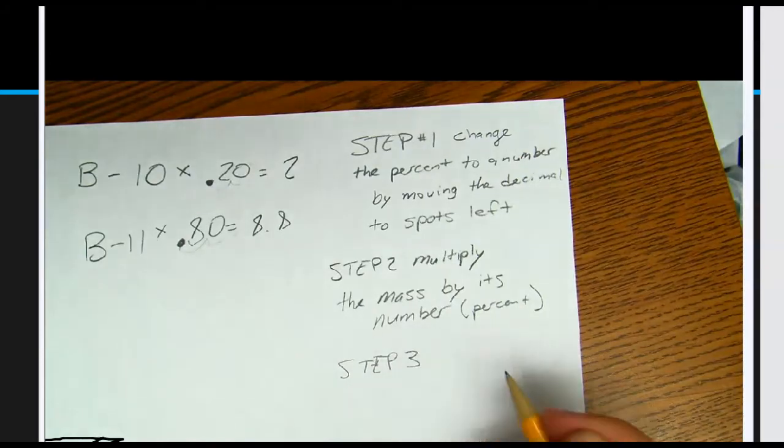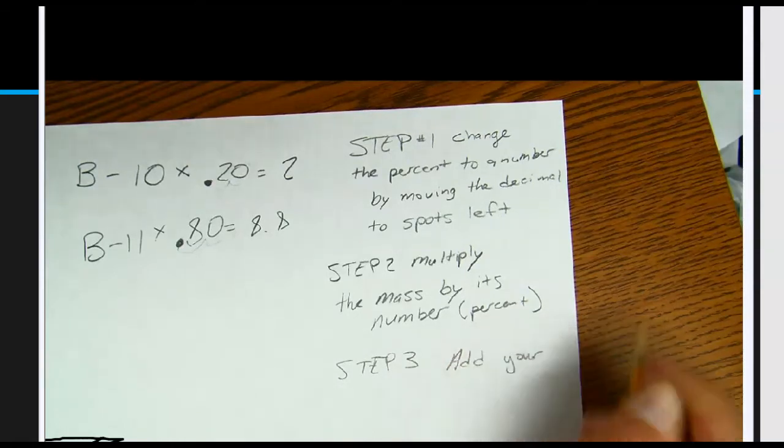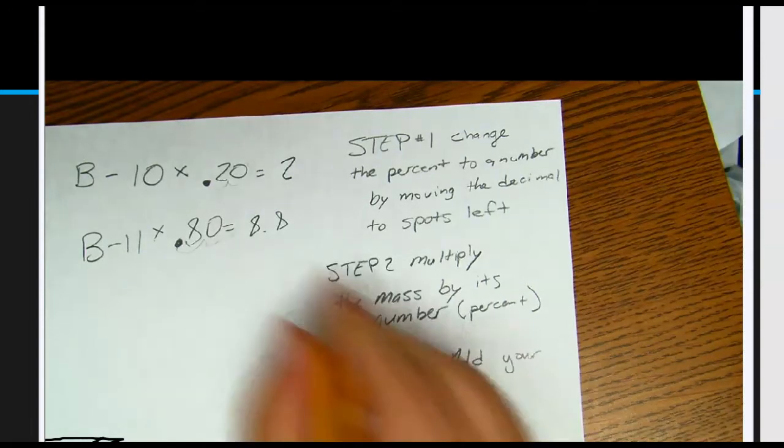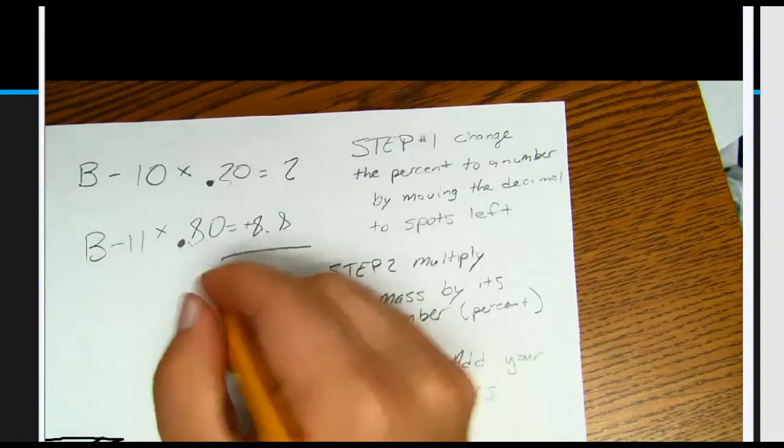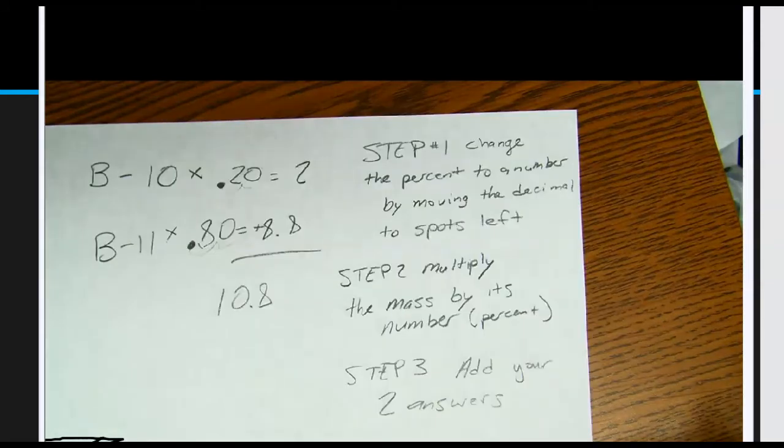Step three, and the final step: add your two answers. Add your two answers. So if I add these two, I get 10.8. And that's your final answer.